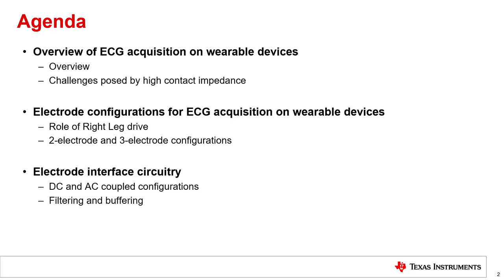We will start with an overview of ECG signal acquisition on wearable devices. We will specifically look at the challenges posed by the high contact impedance resulting from small form factor electrodes. Next, we will look at the different electrode configurations and compare two-electrode and three-electrode configurations. We will specifically examine the role of the right leg drive electrode in suppressing common mode interferences. We will also look at the electrode interface circuitry — additional circuitry that might be needed between the ECG electrodes and the ECG input pins of the analog front end.